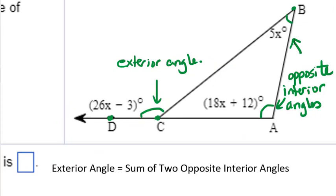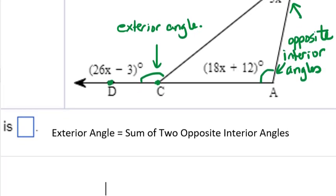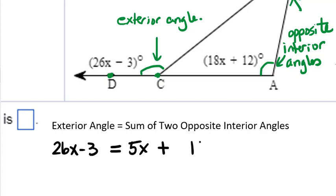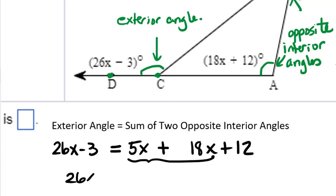We're going to use that fact to find the missing angle measures. Our exterior angle has a measure of 26x minus 3, and we're going to add together the two opposite interior angles: 5x is one of them, plus 18x plus 12. So we have a linear equation — no powers on x — and we'll solve for x. Combining like terms on the right gives us 26x minus 3 equals 23x plus 12.